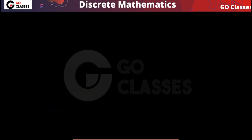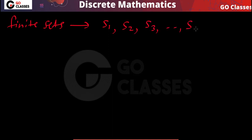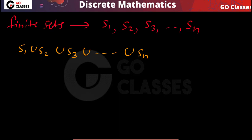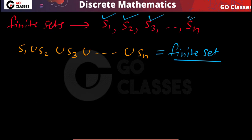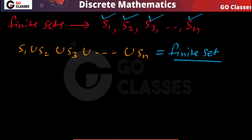Now assume all of S1, S2, S3, ..., Sn are finite sets. What can you say about their union S1 union S2 union ... union Sn? Their union must also be a finite set. It cannot be infinite, because in every set the number of elements is finite. The union merges all the elements, and you will still have a finite number of elements.